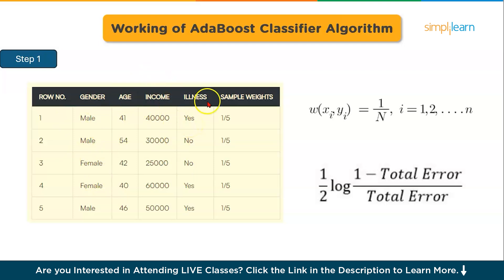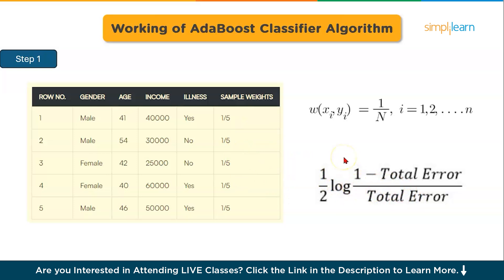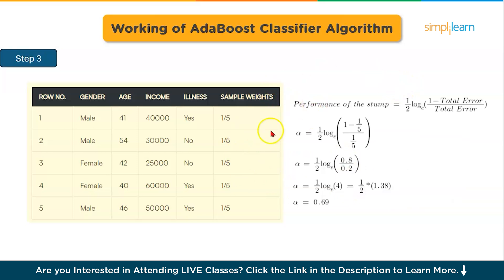In step three, using this approach we determine the amount of say — or importance or influence — for this classifier and categorize data points using the formula. The total error is the sum of the misclassified data points' sample weights. If there is one incorrect output in our dataset, the total error is 1/5. We then find the performance of this stump using the alpha formula, where 0 represents a flawless stump while 1 represents a bad stump.